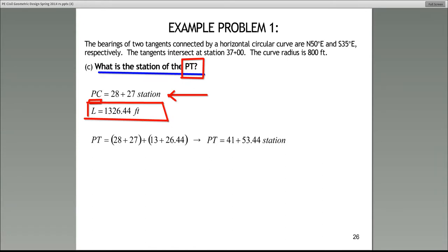I'll repeat. The only correct way to calculate the station of the PT is to take the station of the PC and add to it the actual length of the curve. Of course, we do that in terms of stations. So the station of the PT becomes 28+27 plus 13+26.44, which equals 41+53.44.